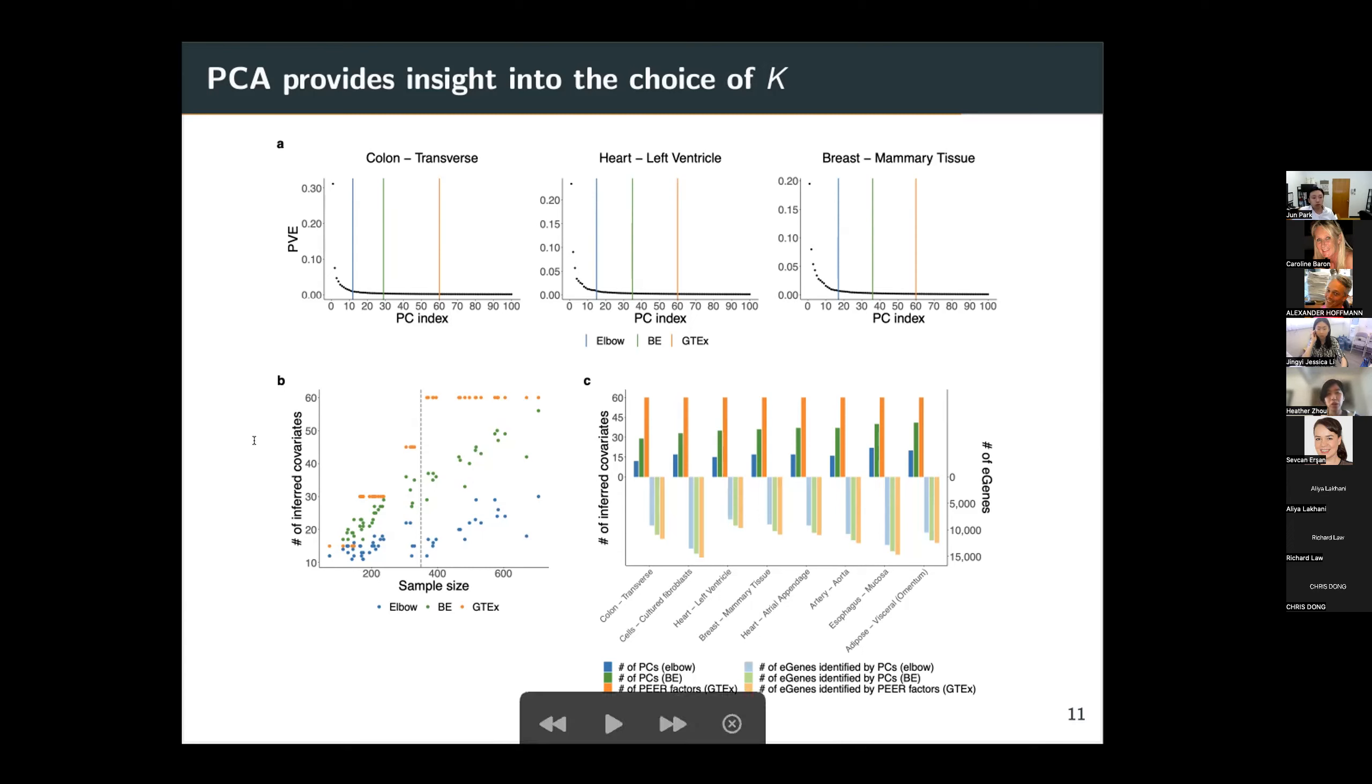So panel B shows a contrast of how many PCs Elbow and BE choose for the different tissue types in GTEx EQTL data, and also the number of PEER factors chosen by GTEx by maximizing the discoveries. So this plot shows that for a lot of tissue types, especially to the right of this vertical line, the number of PEER factors chosen by GTEx is significantly above the number of PCs recommended by Elbow or BE. And in panel C, we try to show that these numbers of PEER factors are indeed too large because we can reduce the number of PCs by a large proportion and still obtain approximately the same number of discoveries.